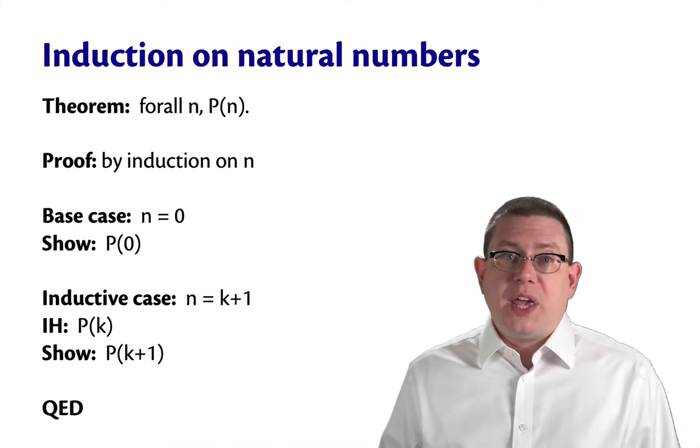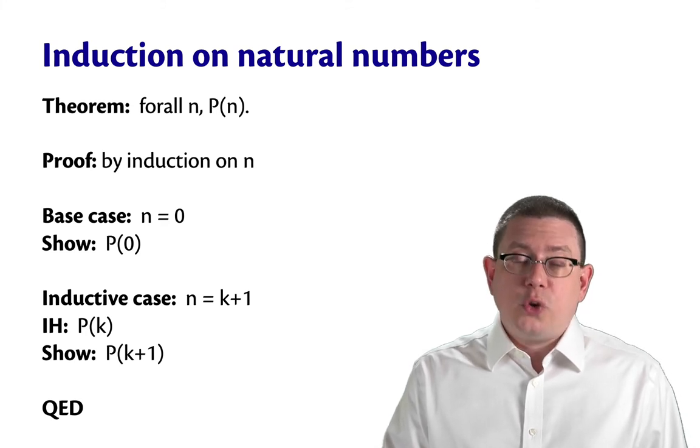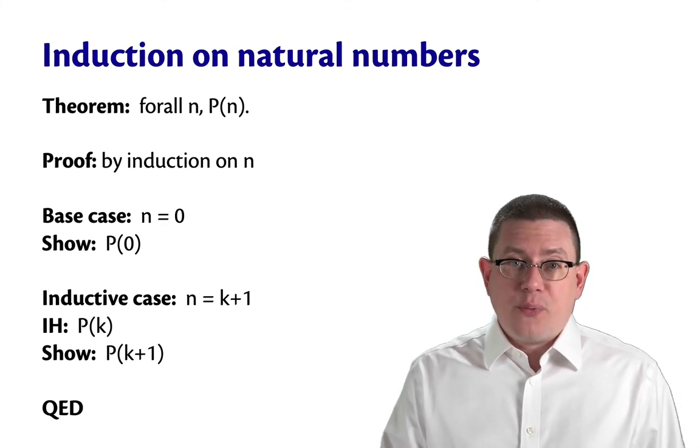And we get to assume that the property P holds of that smaller natural number K. So if we can show those two things, the base case and the inductive case, then we're allowed to conclude by induction that that property P holds of all natural numbers.